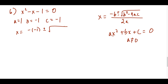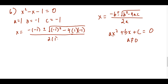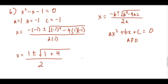Plugging into the quadratic formula: x = (-b ± √(b² - 4ac)) / 2a. Be careful to put parentheses around negative terms before squaring. With b = -1: -b becomes +1, b² = (-1)² = 1, and -4(1)(-1) = +4, all over 2. This simplifies to x = (1 ± √5) / 2, giving two answers.